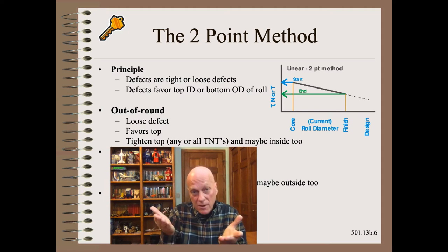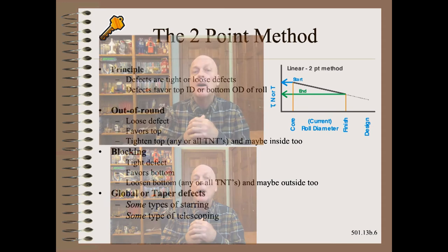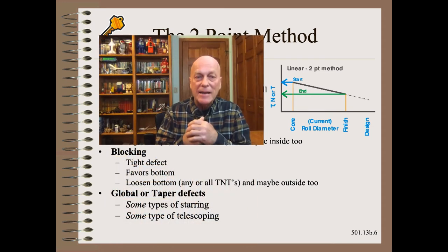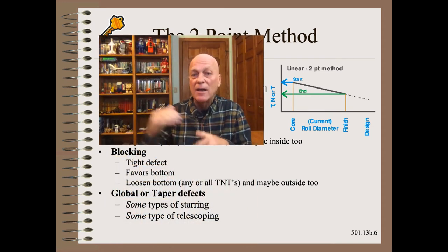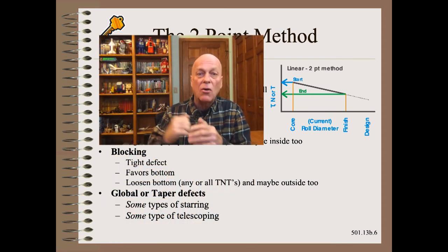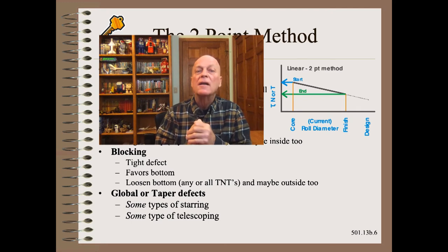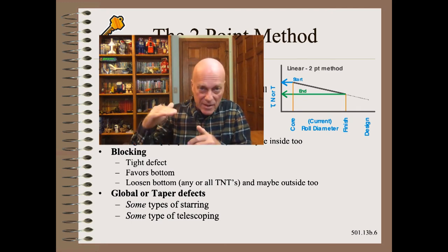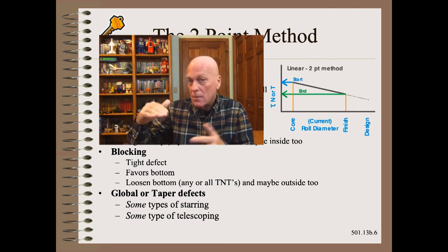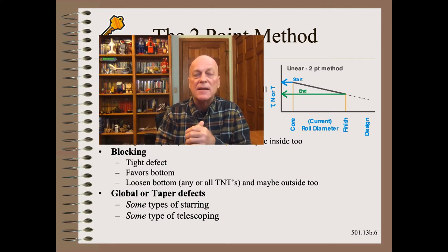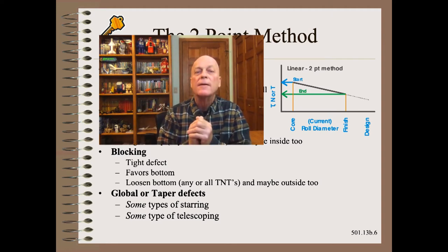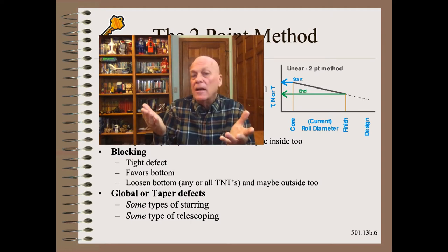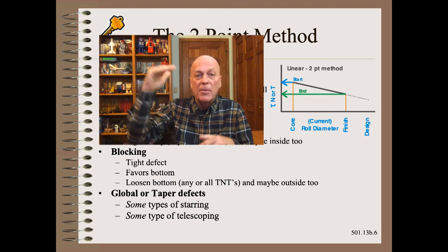Using what we have learned so far, let us practice on blocking. Blocking is a tight defect that favors the core. Thus we would begin by reducing any or all of the TNTs at the start of the wind, but may or may not do anything with the top of the roll.